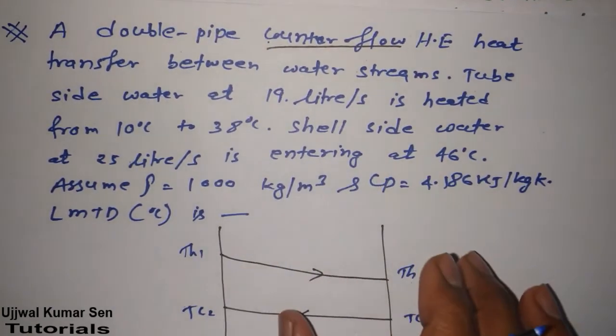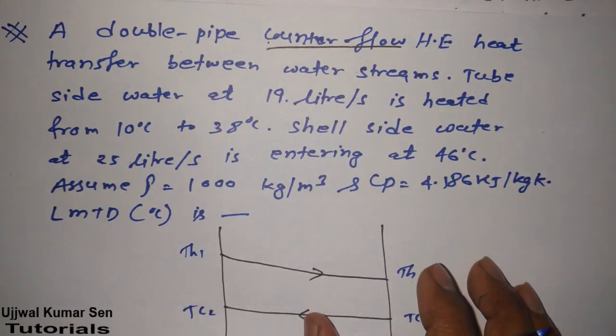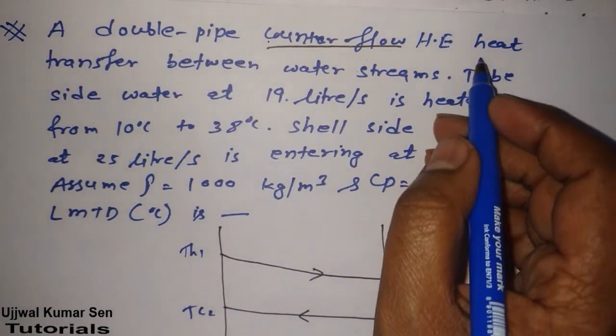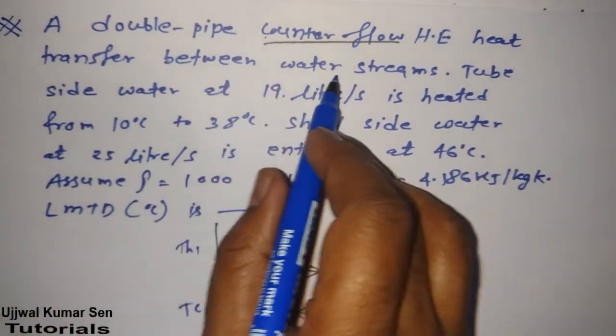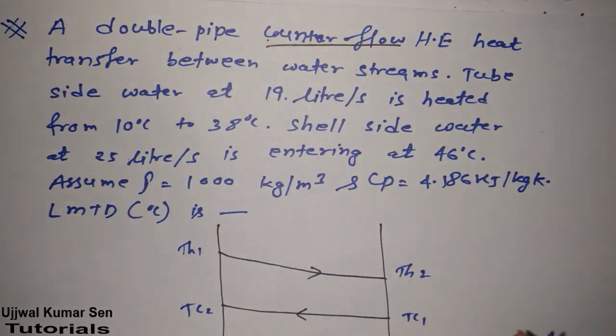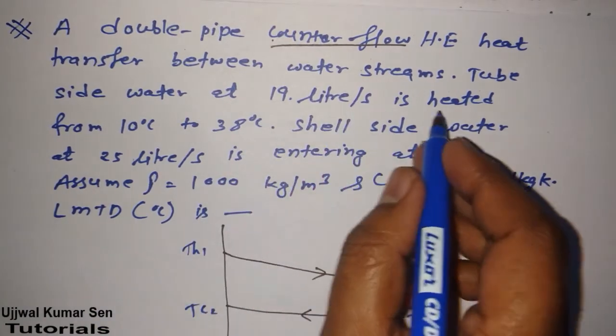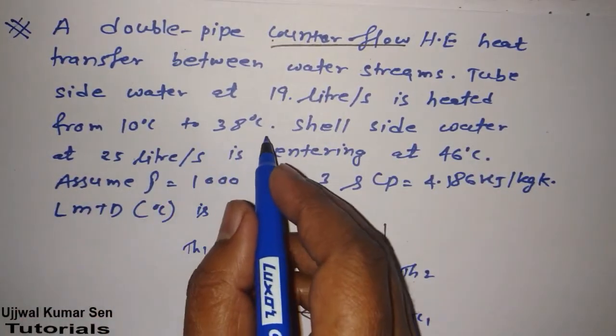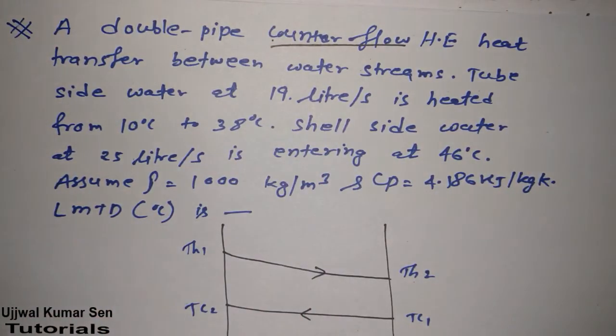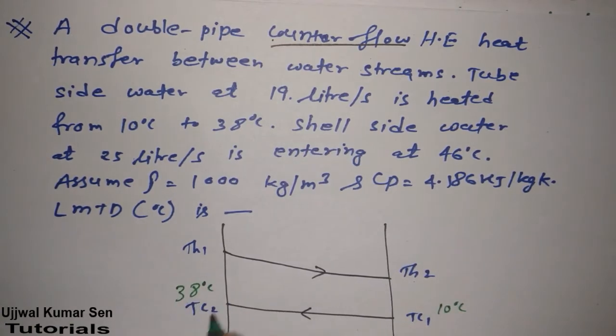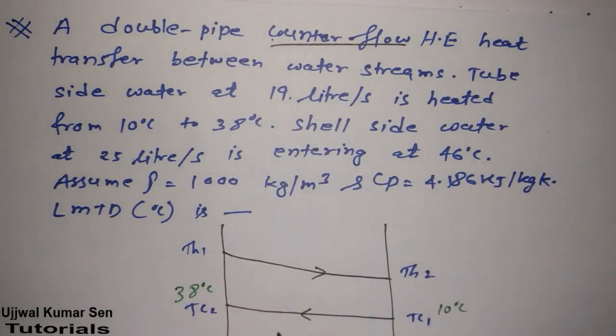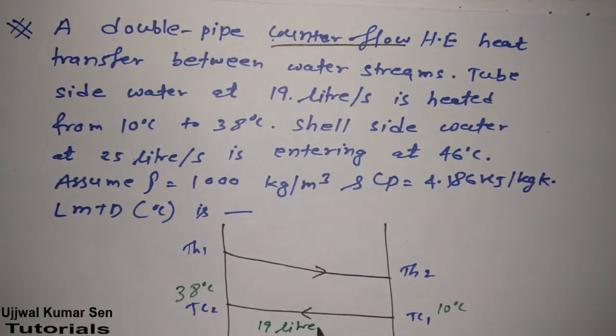Now we will write what they have given in this heat exchanger and we will find out what they wanted to get from this question. So they said that counter flow heat exchanger heat transfer between water streams. Both the streams are water we got from this question. So tube side water is heated from 10 degree Celsius to 38 degree Celsius and its flow rate is 19 liter per second.